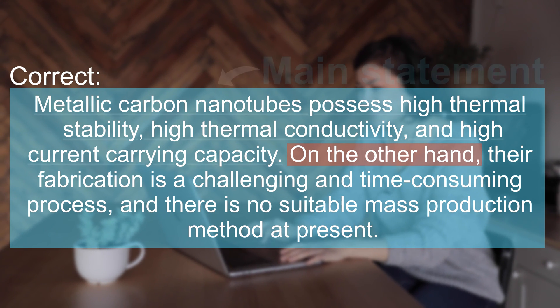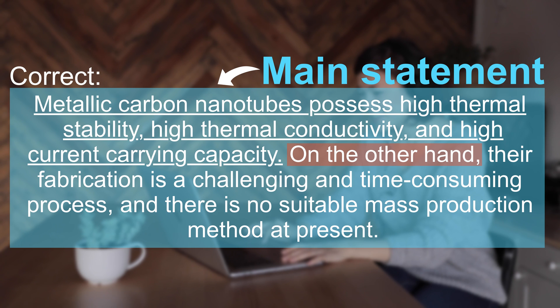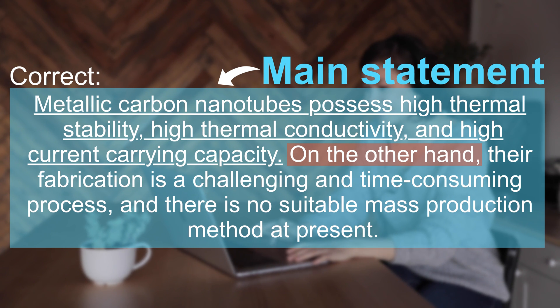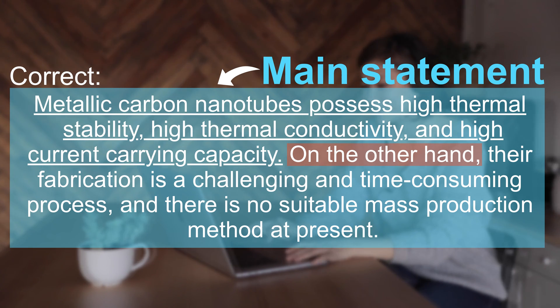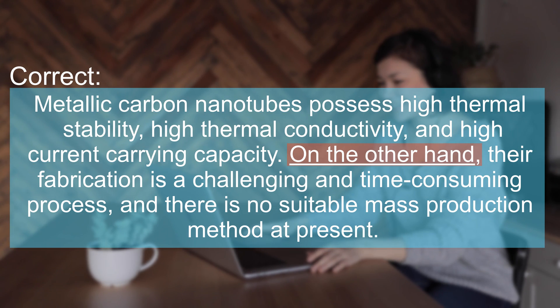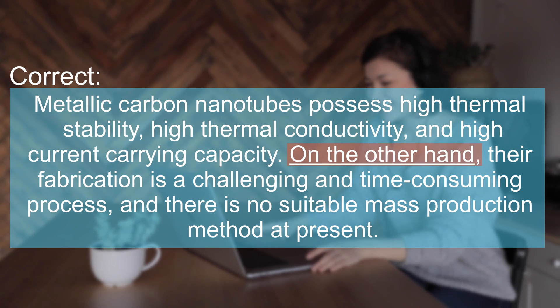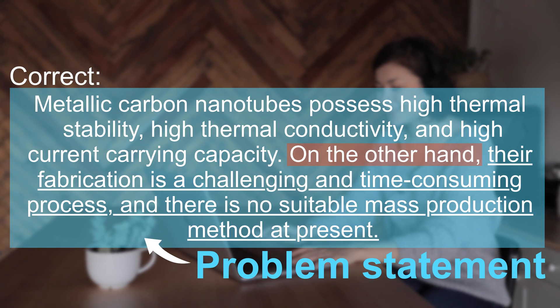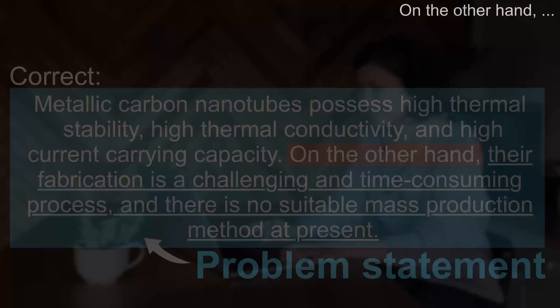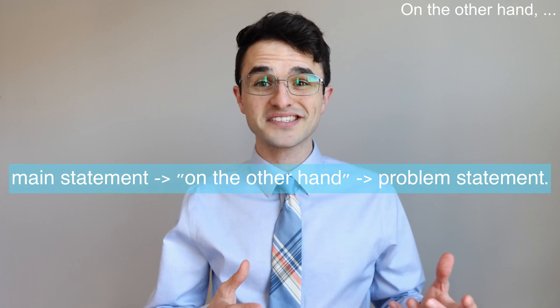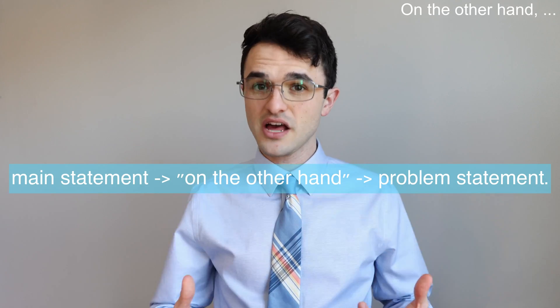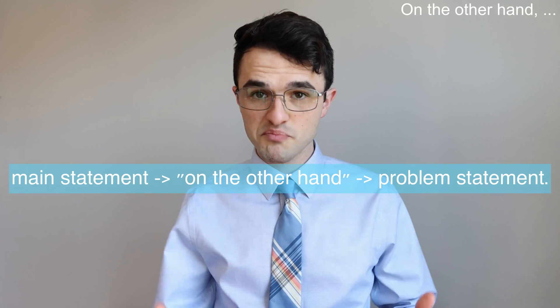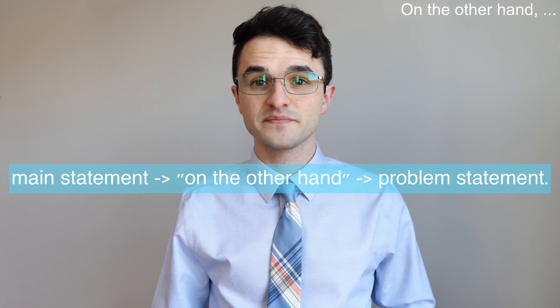So in this example, we have the main statement, which shows the benefit. Then 'on the other hand' signals that a problem statement will follow. The pattern is: main statement — on the other hand — problem statement.